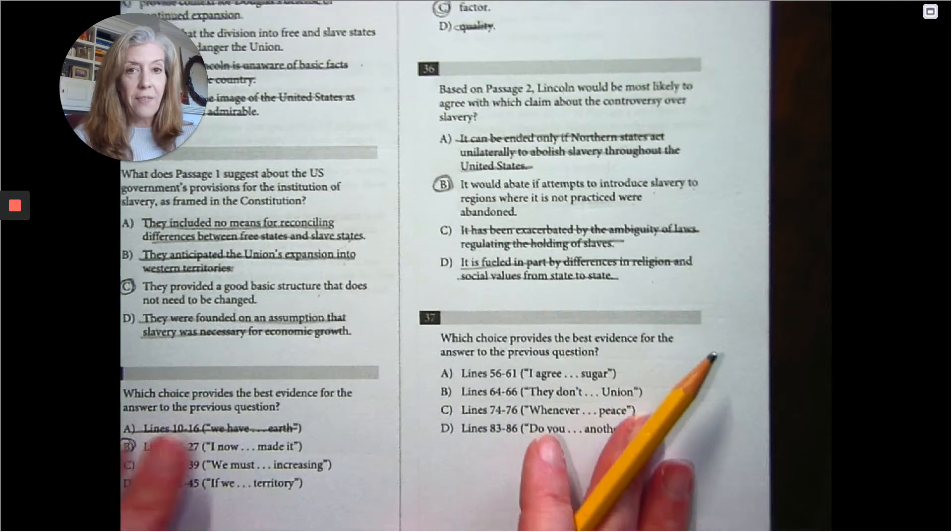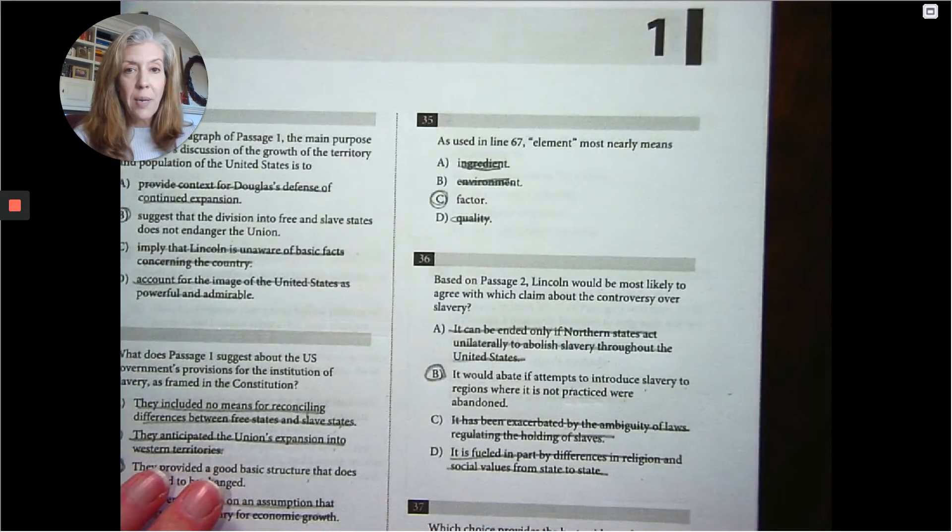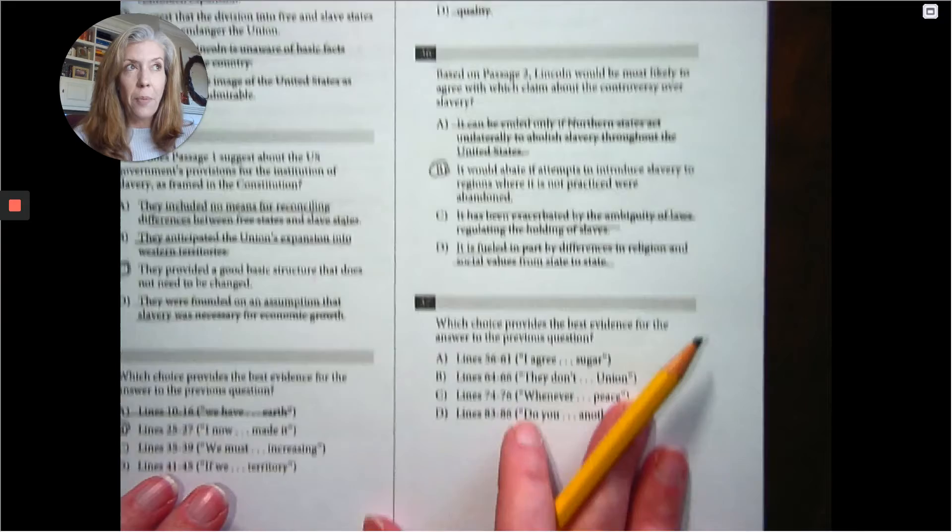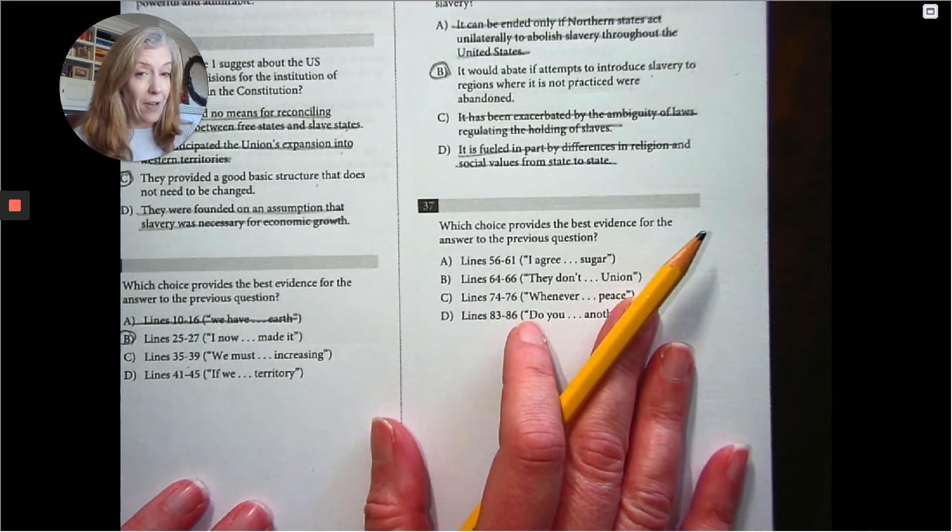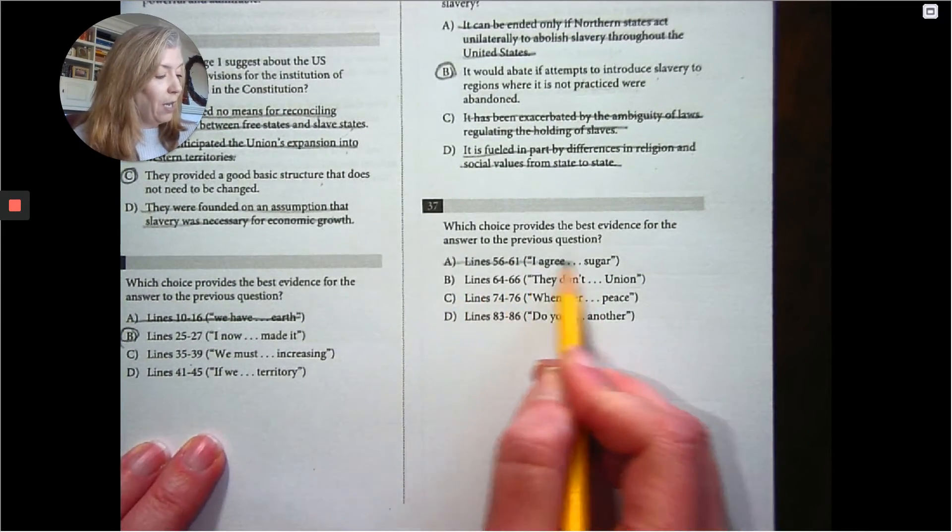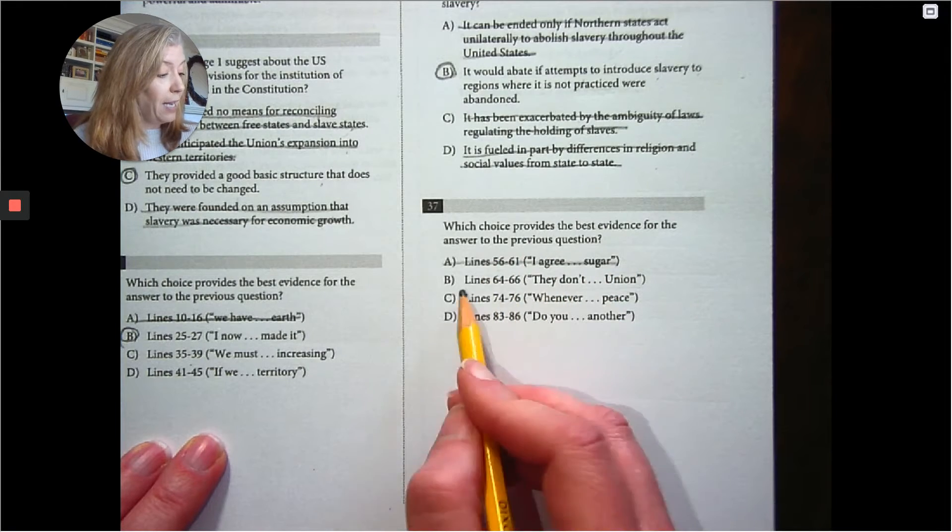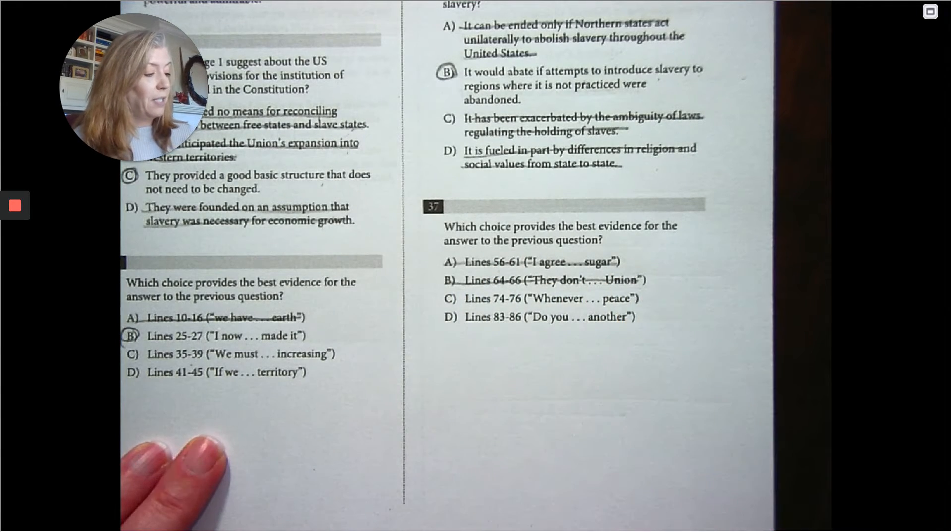So I'm going to have a look first and see if I can get rid of any. Question number 35 came from line 67, which means I can get rid of 56 to 61 and I can get rid of 64 to 66.